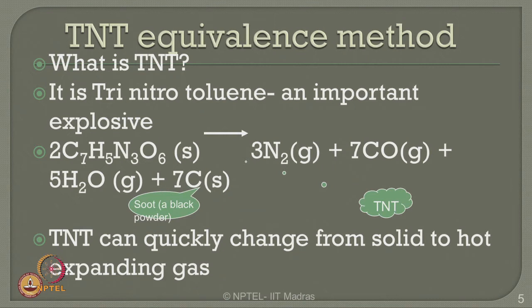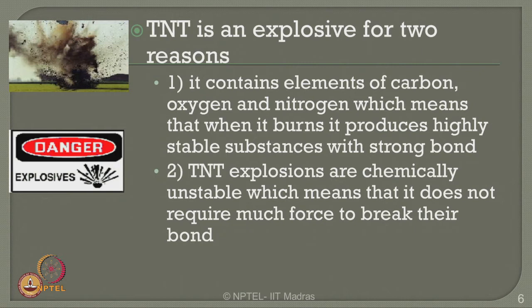TNT has a very interesting characteristic: it can quickly change from solid to hot expanding gases. TNT is an explosive fundamentally for two reasons. First, it contains elements of carbon, oxygen, and nitrogen, which means when it burns it produces highly stable substances with strong bonds. TNT is also chemically unstable, meaning it does not require much force to break its bonds.